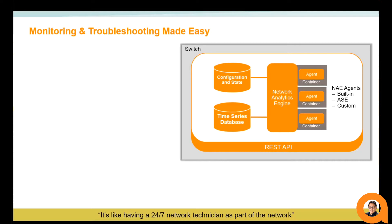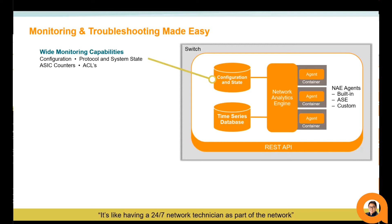The configuration and state database gives users the ability to pull values such as configurations, protocols, system states, ASIC statistics, ACLs, and much more. Plus, because these values correlate to a time series, it gives a realistic model of the network behavior.